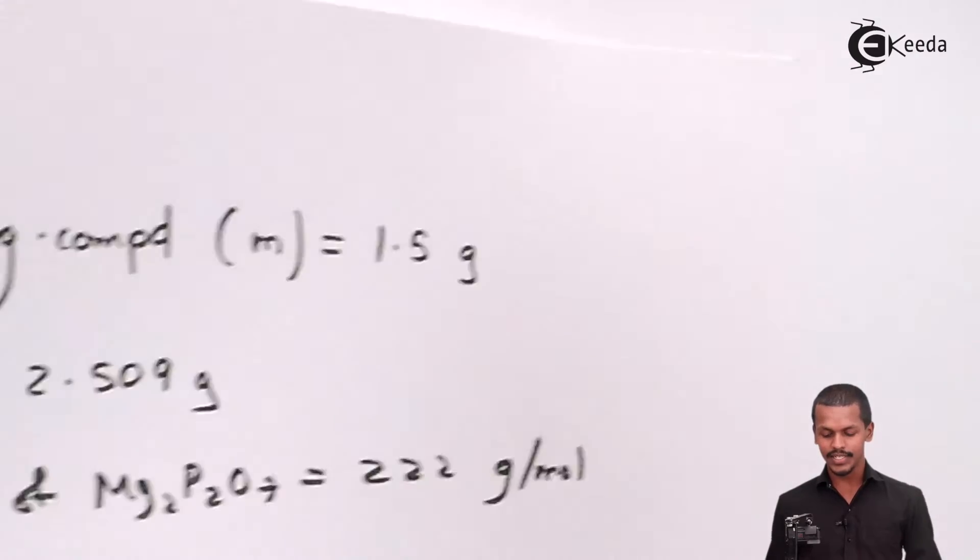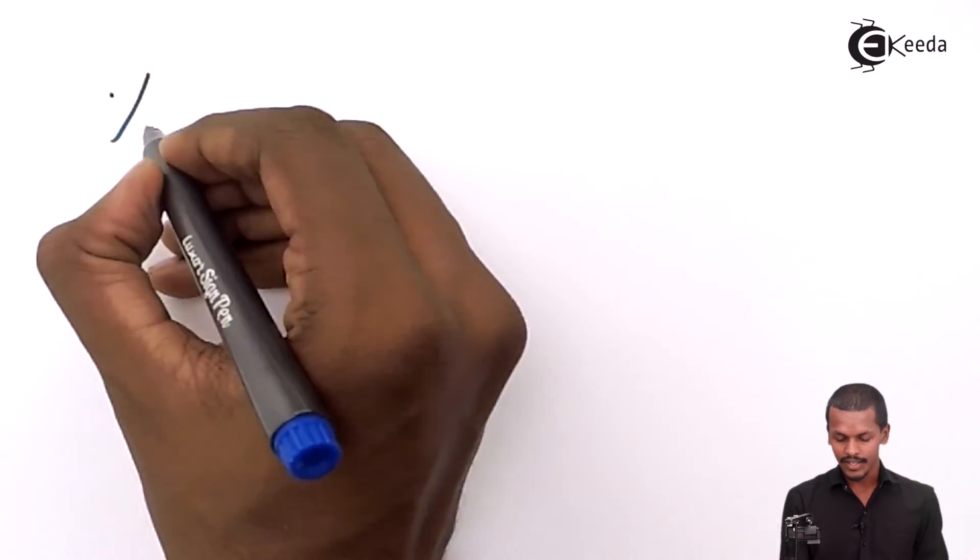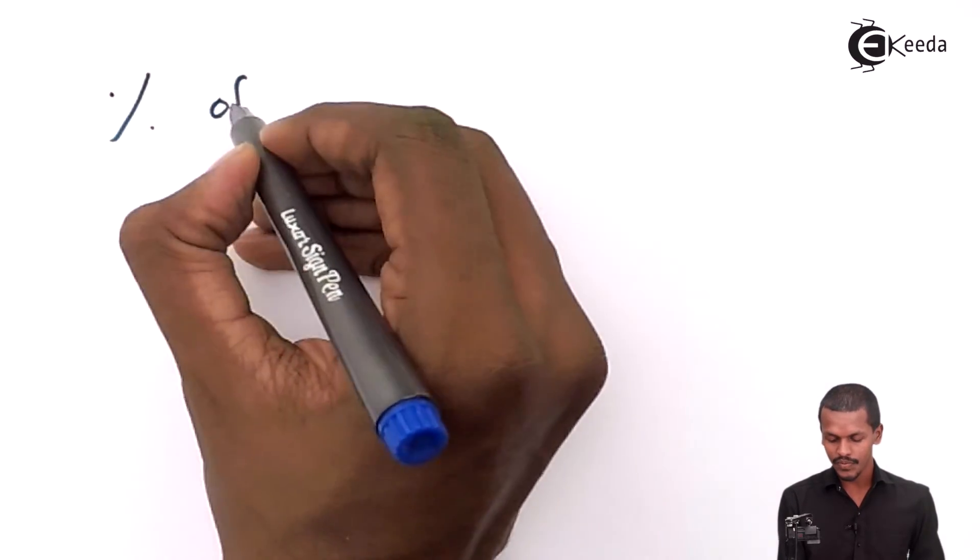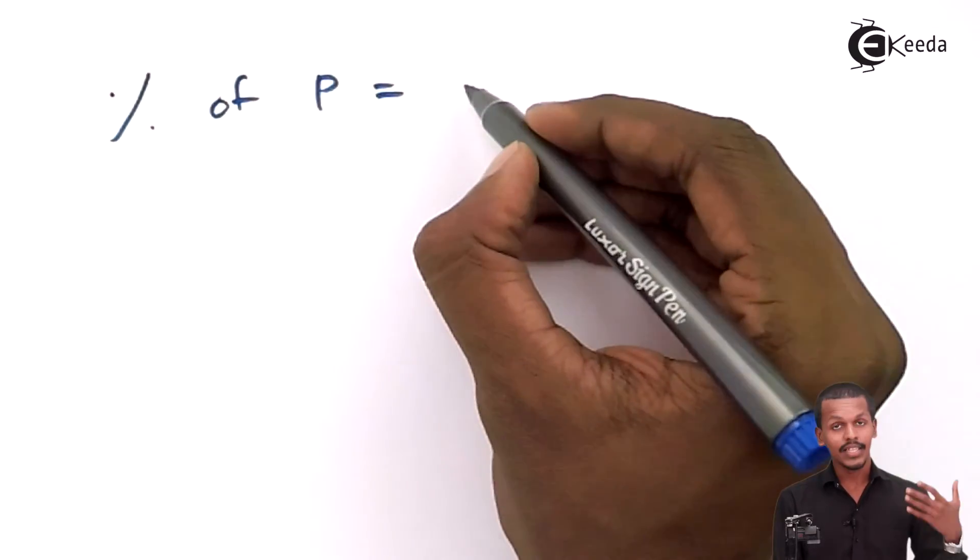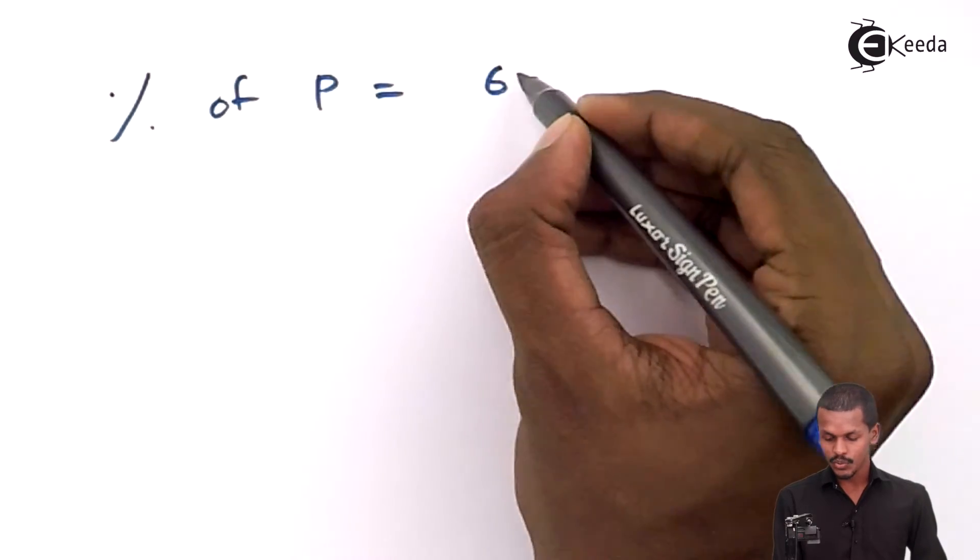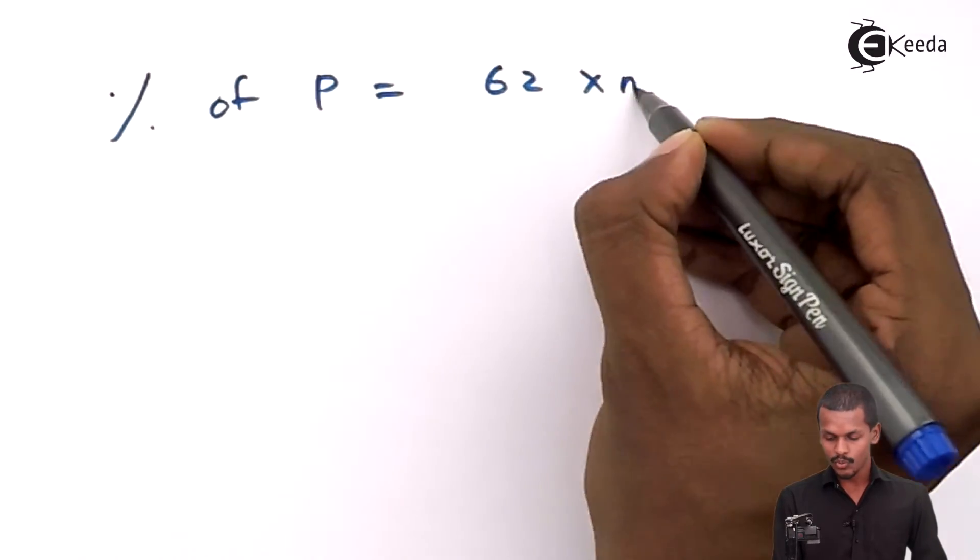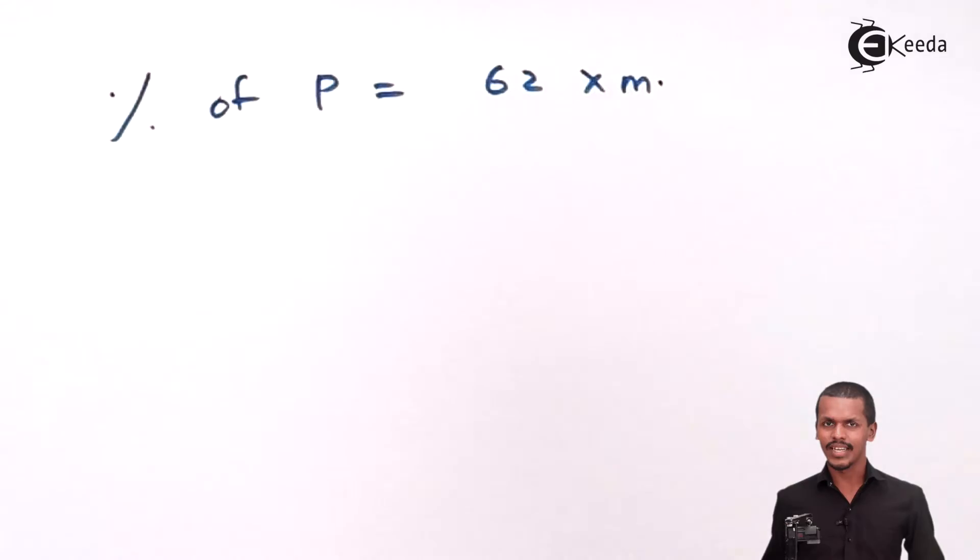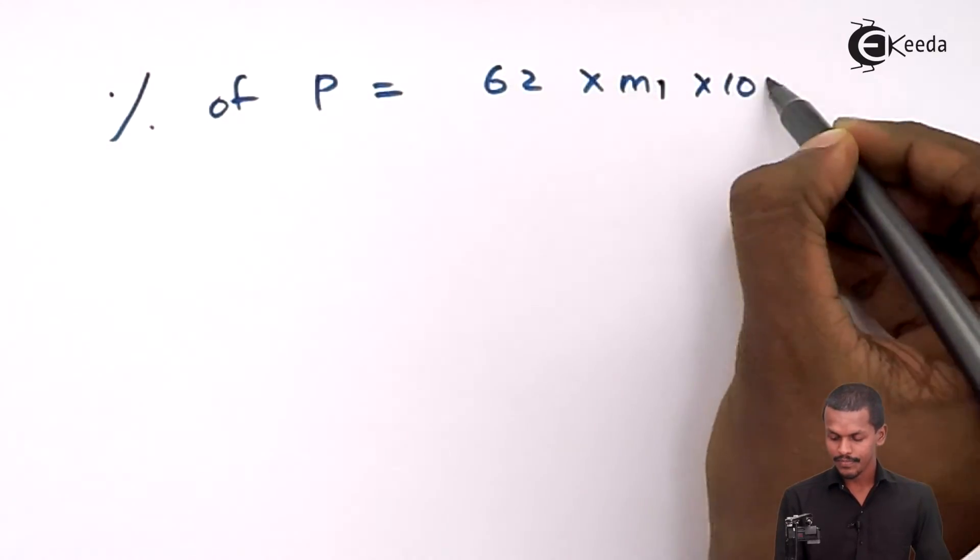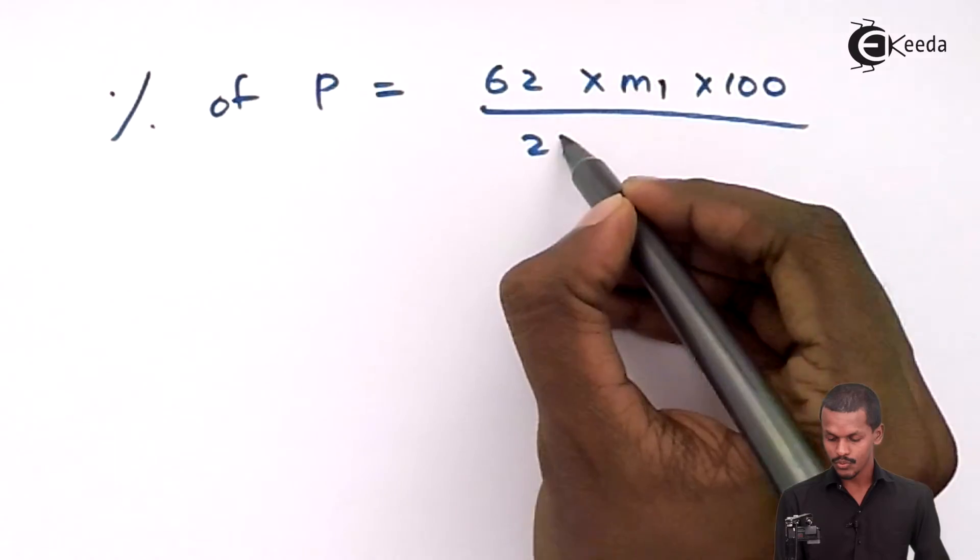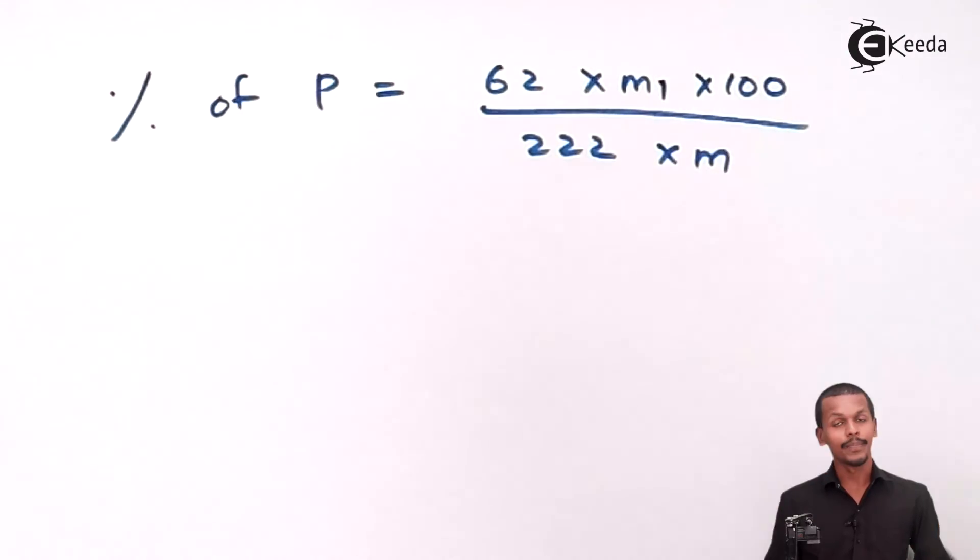We know the percentage can be calculated using this formula when magnesia is used. The percentage of phosphorus is determined by: (62 × M1 × 100) / (222 × m).